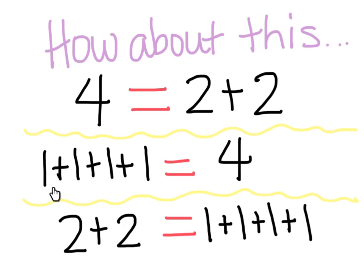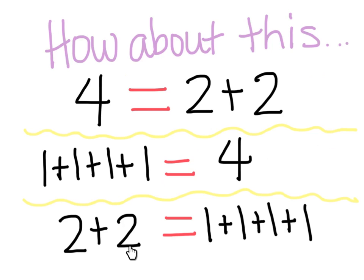Look at this one: it's one plus one plus one plus one. If you put that together, what are you going to get? Four. And look, on this side it's four. Look at this one — two plus two. We know that that is four. And one plus one plus one plus one is four. It is equal. It's the same on this side and the same on this side.